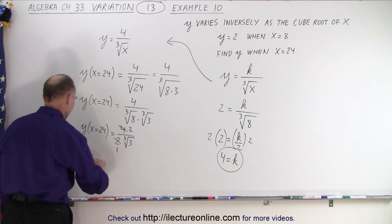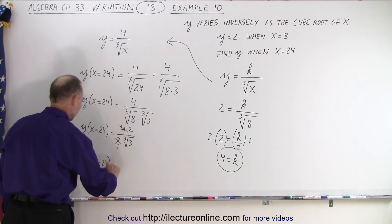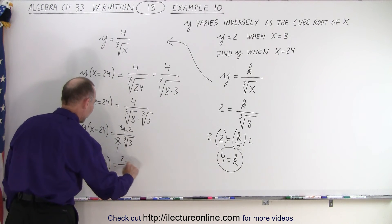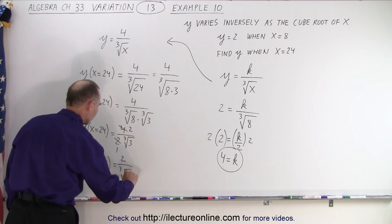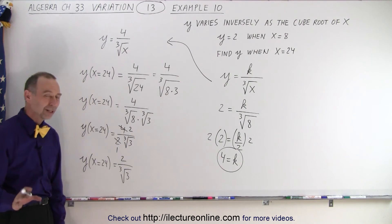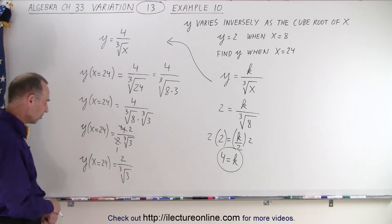So that means that y, when x equals 24, is equal to 2 divided by the cube root of 3. Now, of course, we do not like to keep radicals in the denominator.